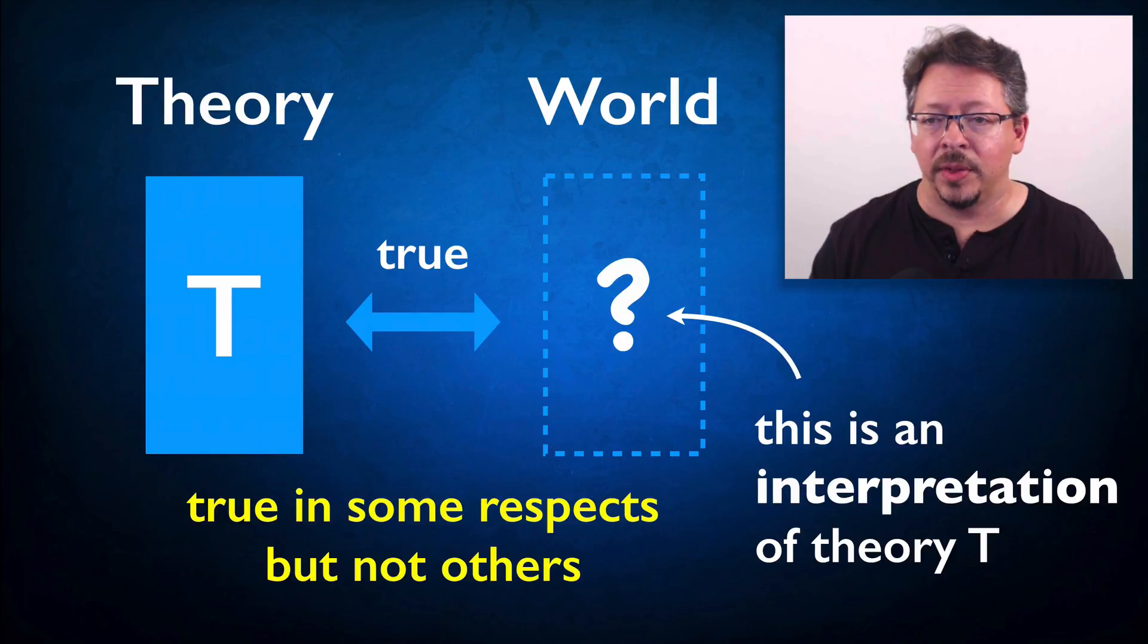Second, if theories or models are true, they'll be true in some respects and not others. We need to be clear about what these respects are.